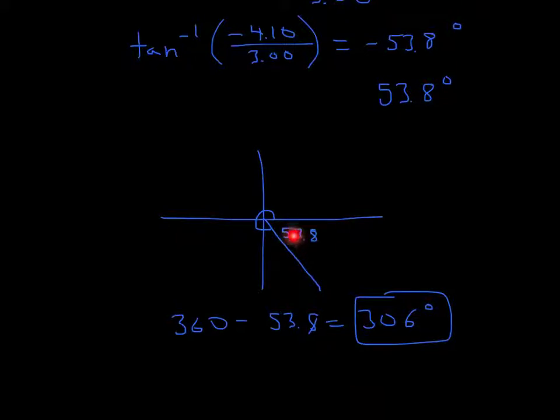So now, since we've found this angle, what we do is, since we know that a circle is 360 degrees, we can subtract 360, the total circle, from 53.8, this small piece, to get this piece that we're looking for. And the final answer is 306 degrees.